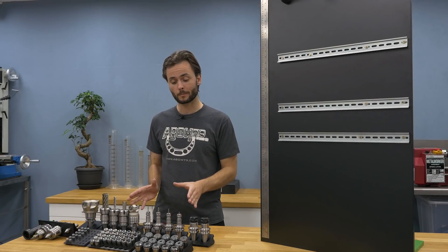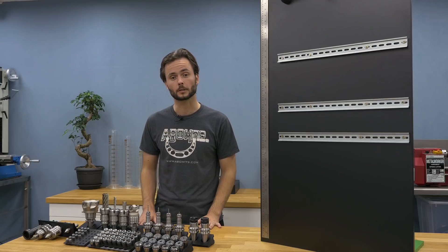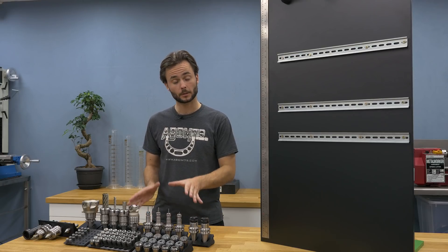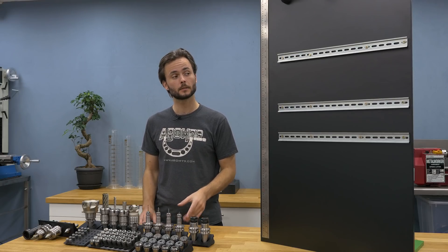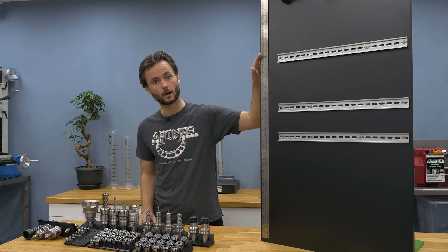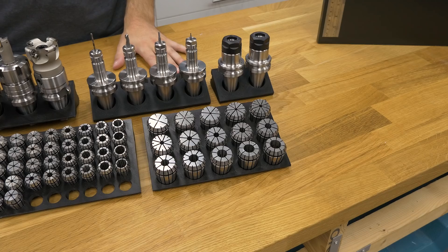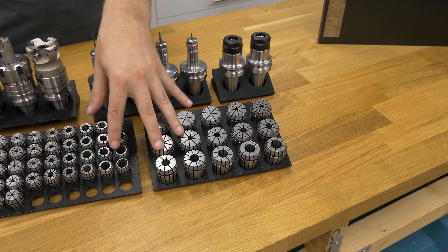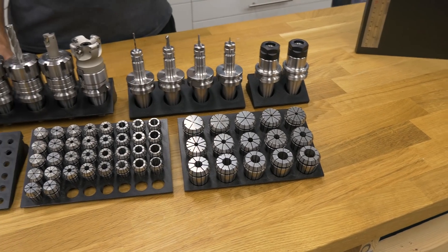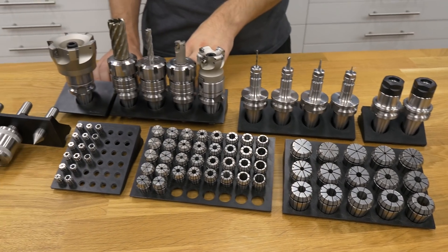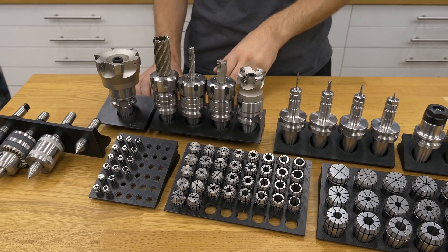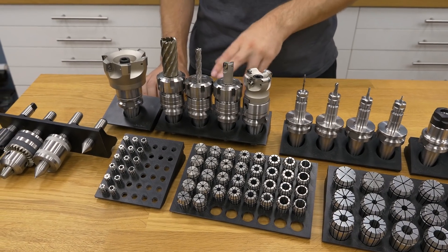So these are a couple of my tool holders and ER collets. And these are also the mounting blocks that I designed to be mounted on these DIN rails. I made these mounting blocks for ER collets, for BT30 tool holders, but these are also compatible with ISO30 and SK30.